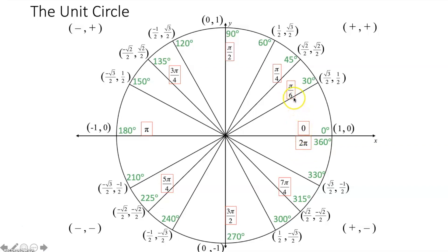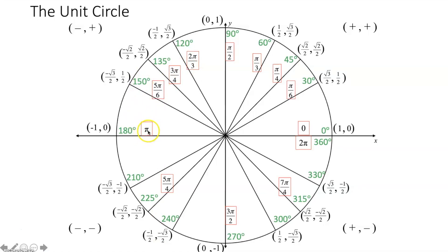Since a 30-degree rotation is π over 6, we can count by π over 6s around the unit circle: 1π over 6 at 30°; 2π over 6 (π over 3) at 60°; 3π over 6 (π over 2) at 90°; 4π over 6 (2π over 3) at 120°; 5π over 6 at 150°; 6π over 6 (π) at 180°; 7π over 6 at 210°; 8π over 6 (4π over 3) at 240°; 9π over 6 (3π over 2) at 270°; 10π over 6 (5π over 3) at 300°; 11π over 6 at 330°; and 12π over 6 (2π) at 360°.